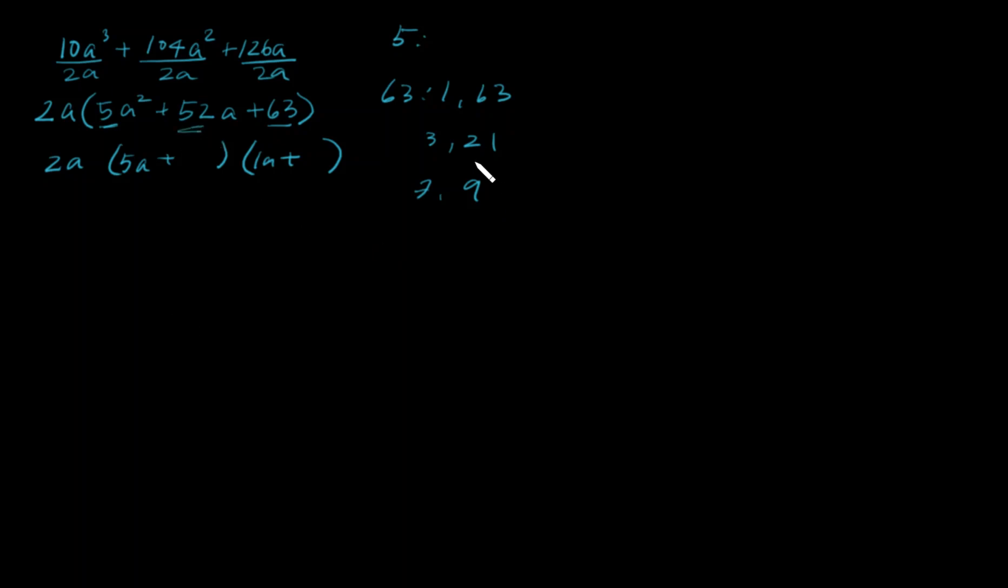I know 21 and 3 are not going to work. I always like to start with the factors that vary the closest together. I can put a 7 here and a 9 here. Let's go ahead and try that. That gives you 35 and 9, so that's 44.